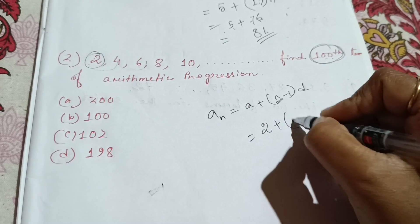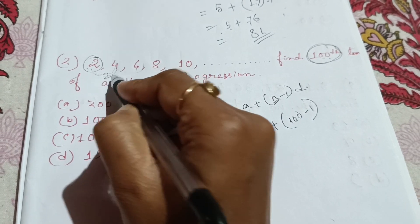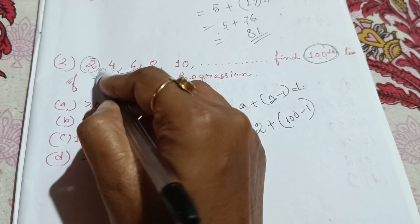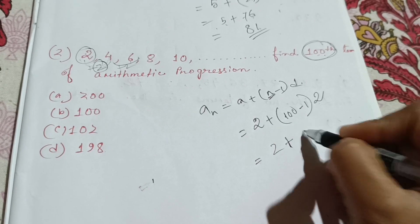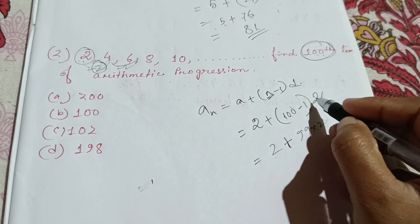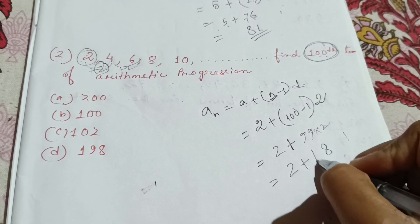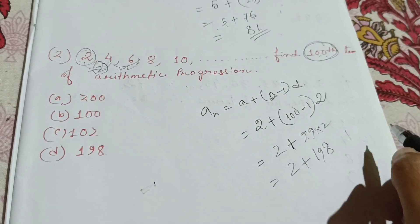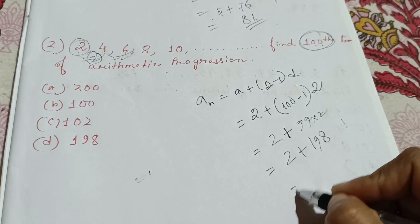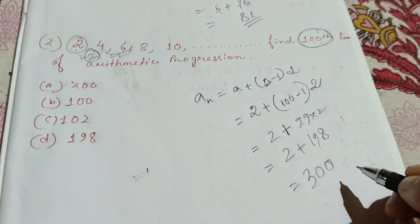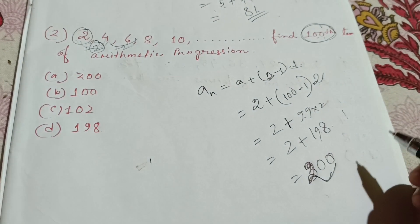D equals 2. So: a equals 2, plus 2, is 2. 2 plus 100 minus 1 is 99. 99 into 2 equals... let's do the second step.